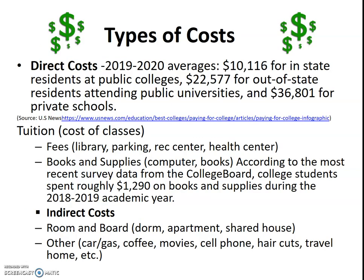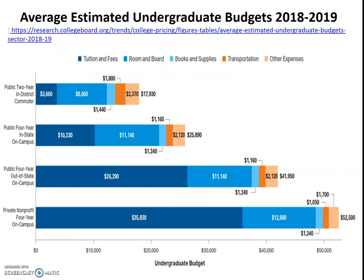For types of costs, this slide shows specific averages for in-state and out-of-state costs. Direct costs include tuition — the cost of classes — fees and books. Indirect costs include room and board, transportation, cell phone, etc. This graph shows an average estimated undergraduate budget from College Board.